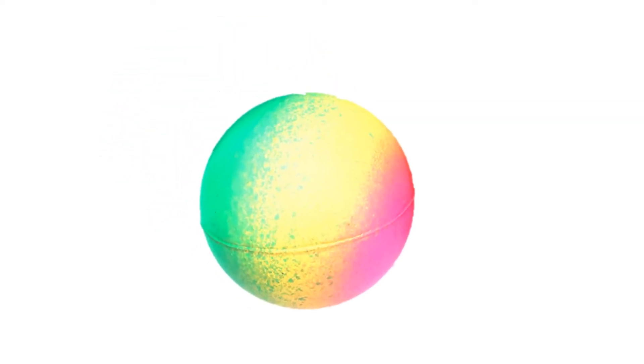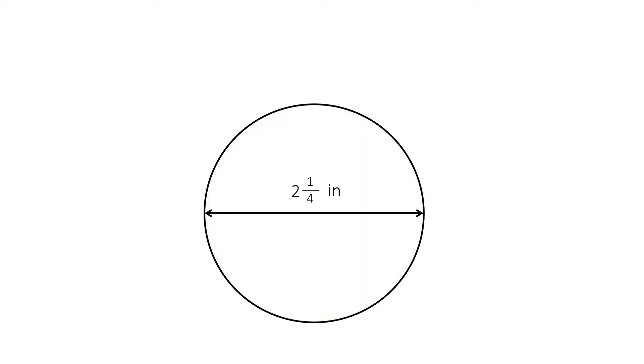We have a rubber ball, and what is the circumference if the diameter is 2 and 1 quarter inches?